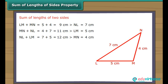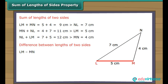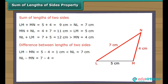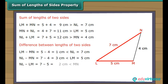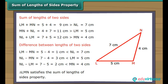NL plus LM equals 7 plus 5, which is greater than MN, which is 4 cm. Now let us look at the difference between the lengths of two sides. LM minus MN equals 5 minus 4, which equals 1 cm, which is smaller than NL, which is 7 cm. NL minus MN equals 7 minus 4, which equals 3 cm, which is smaller than LM, which is 5 cm. NL minus LM equals 7 minus 5, which equals 2 cm, which is smaller than MN, which is 4 cm. Triangle LMN satisfies the sum of lengths of sides property.